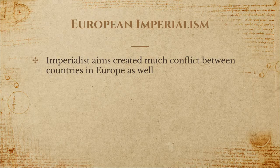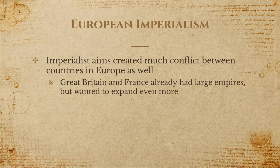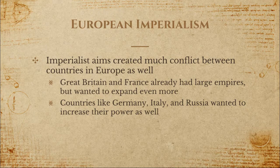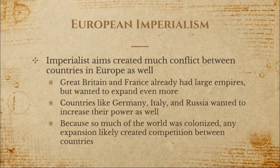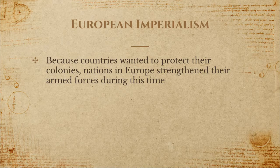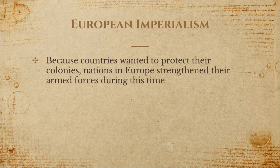Imperialist aims created a lot of conflict between countries in Europe as well. Traditional powers like Great Britain and France already had large empires but wished to expand even more, while countries like Germany, Italy, and Russia consolidated their own lands and also wished to increase their power. So all of these nations were looking for new land to control. However, because so much of the world was already colonized, any expansion would likely create competition between countries — always a dangerous endeavor. As countries looked to take over new lands, European nations holding colonies wanted to protect them and did so by strengthening their armed forces.